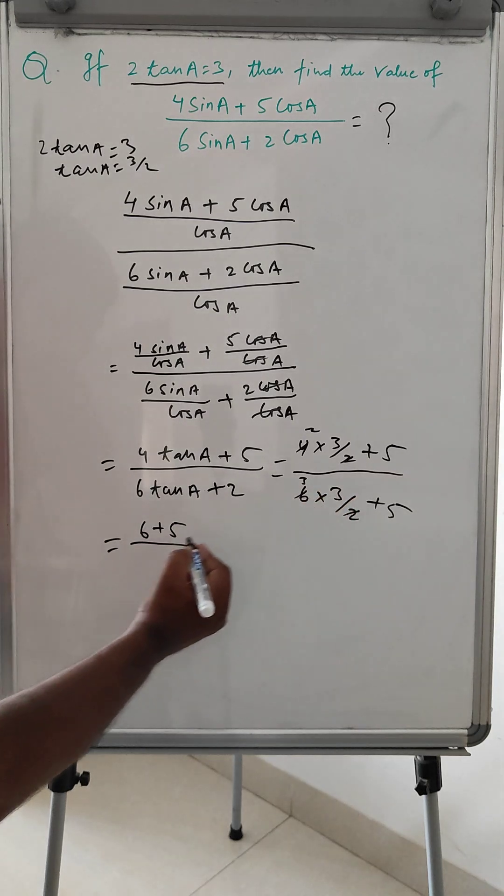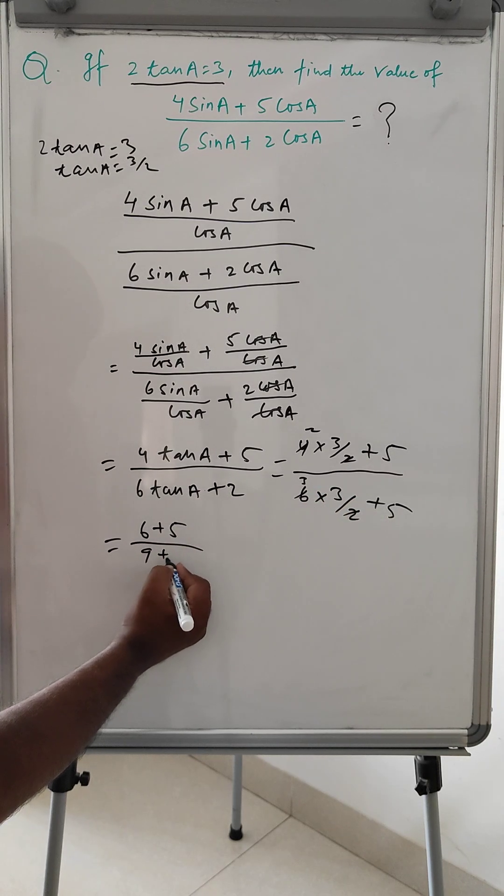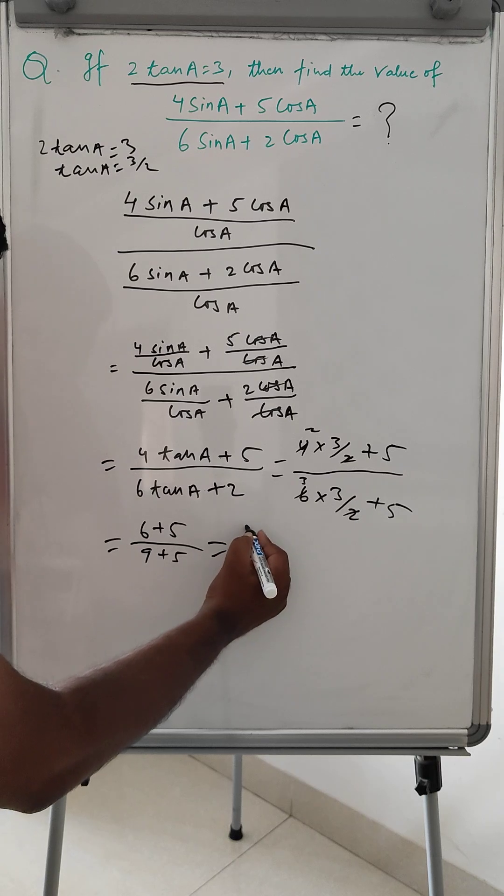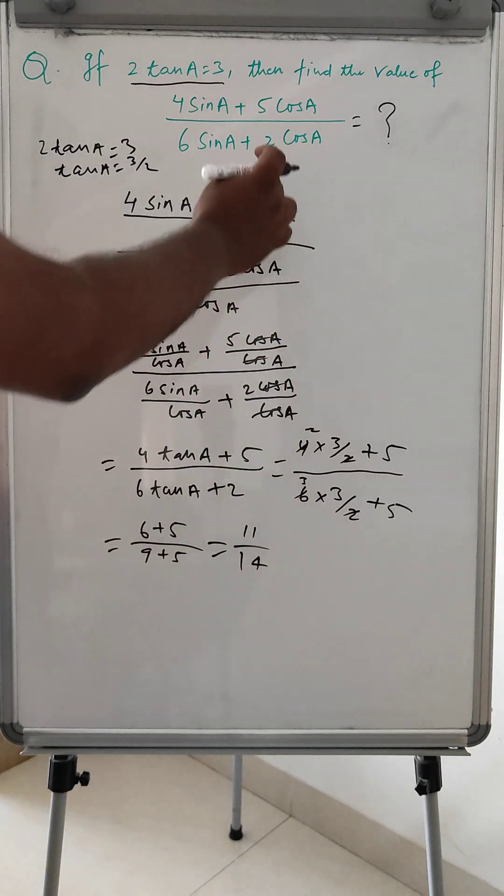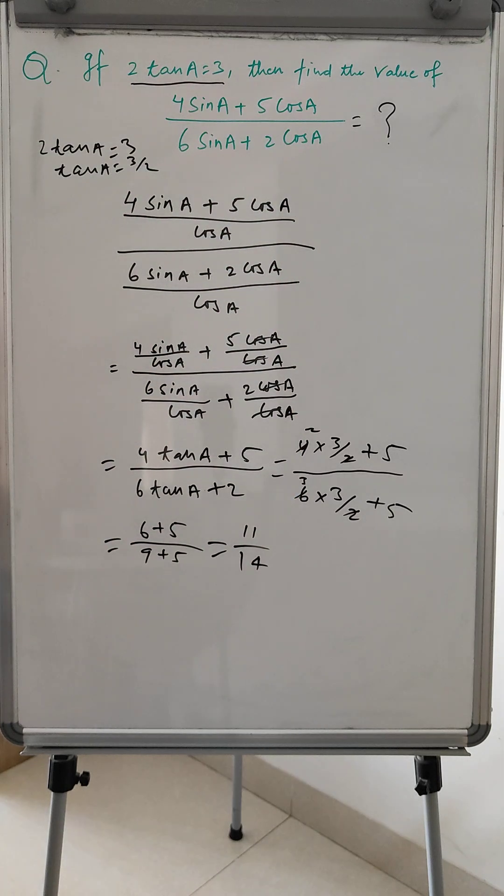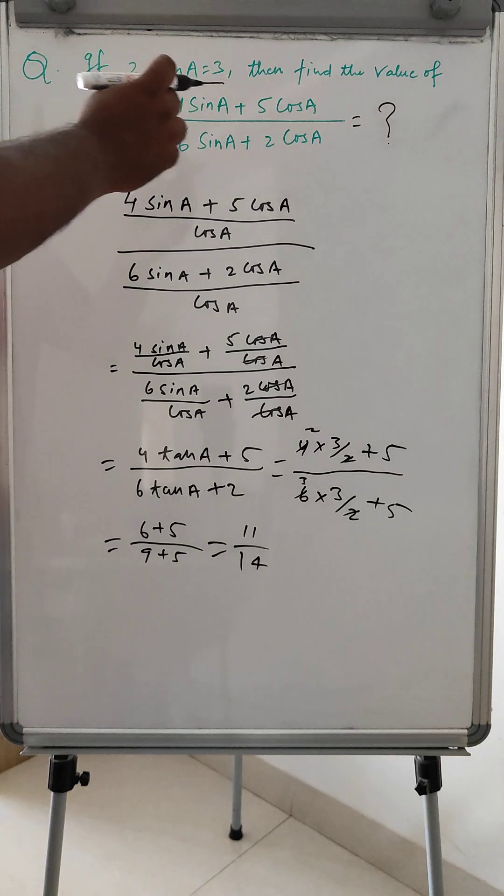And now 9 plus 5, then this is 11 divided by 14. So the value of 4 sin A plus 5 cos A divided by 6 sin A plus 2 cos A is equal to 11 by 14.